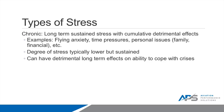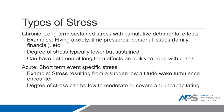Chronic stress can impact your working memory and your ability to recall. Acute stress, on the other hand, is short-term event-specific stress. An example would be stress resulting from a sudden low-altitude wake turbulence encounter. The degree of stress can be low to moderate but also can be severe or incapacitating, and is very short in duration. The negative effects of all stress — chronic and acute — are cumulative.